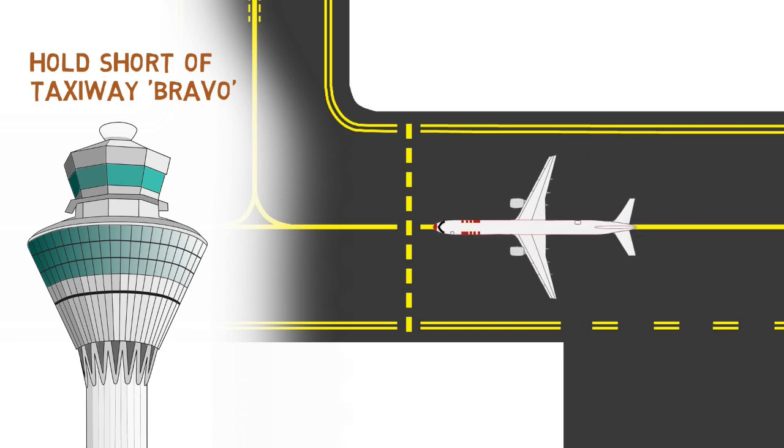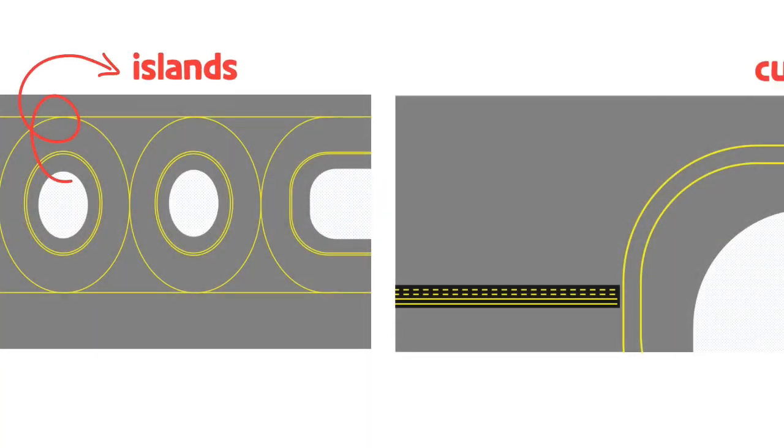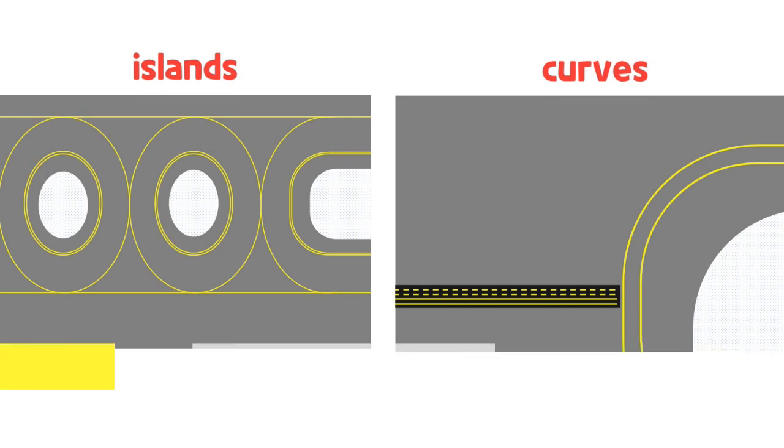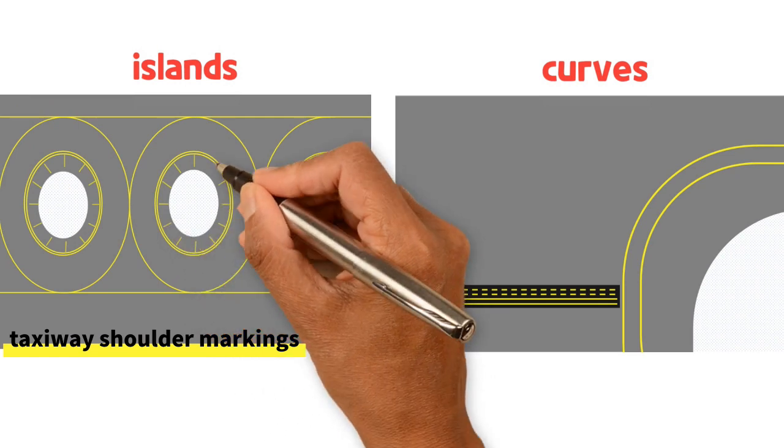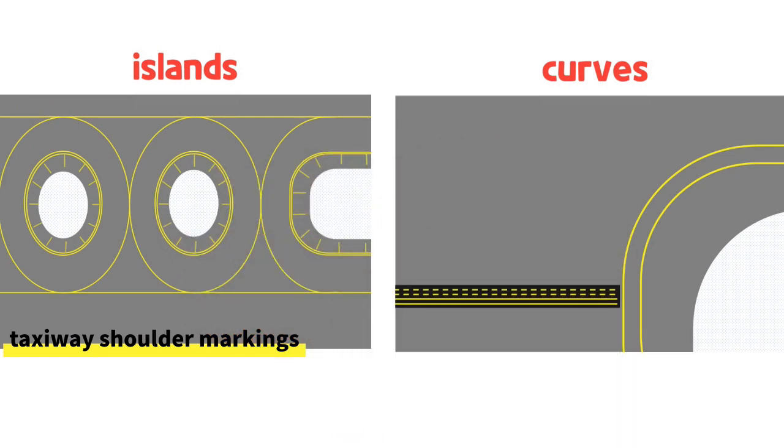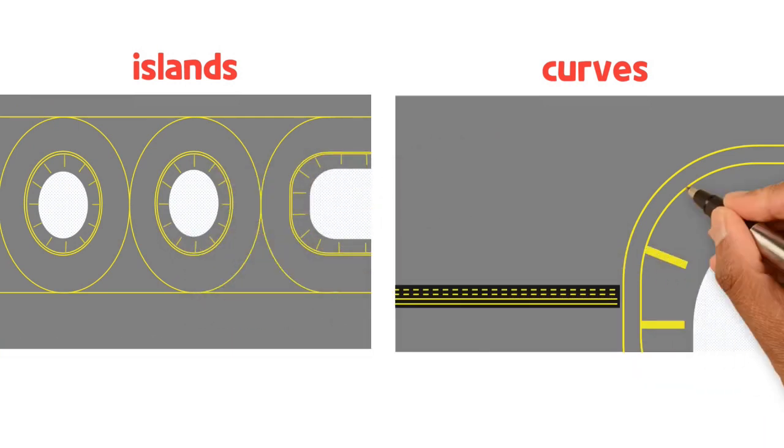Where conditions exist such as islands or taxiway curves that may cause confusion as to which side of the edge stripe is for use by aircraft, taxiway shoulder markings may be used to indicate the pavement is unusable. The taxiway shoulder marking is painted using a perpendicular reference line drawn from the taxiway centerline.